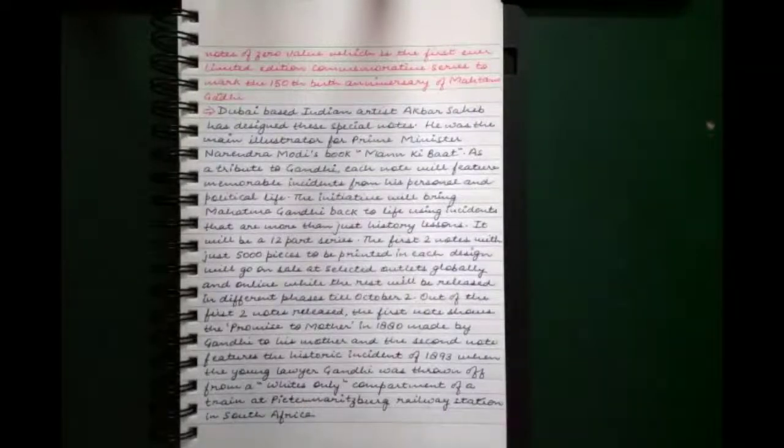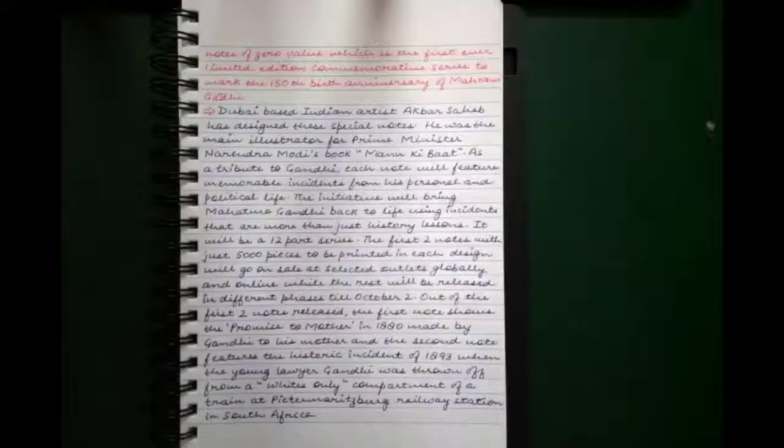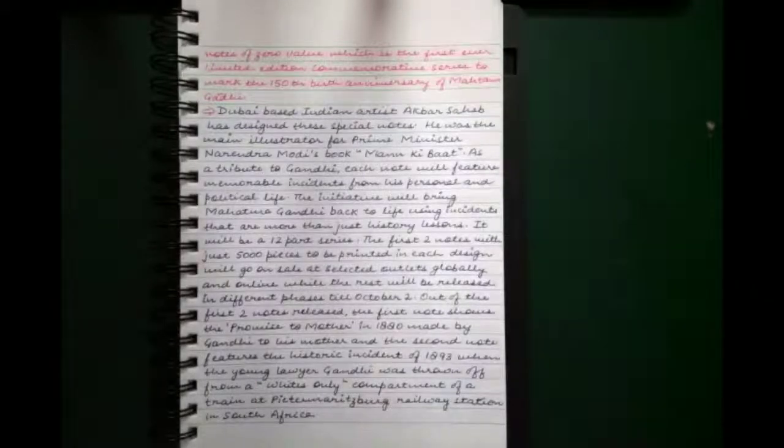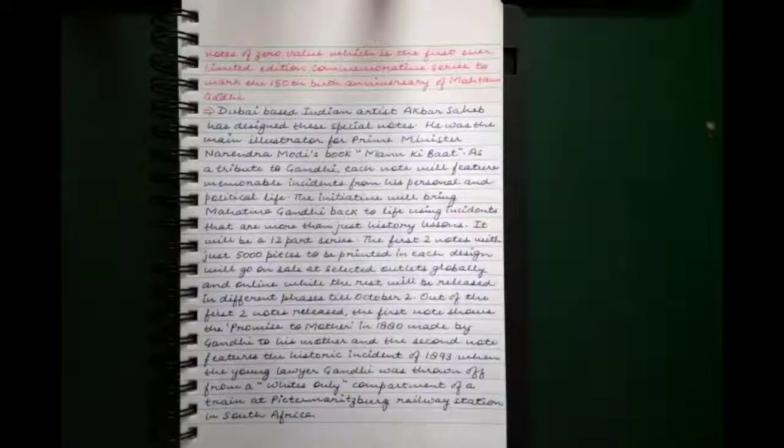Out of the first two notes released, the first note shows the promise to mother in 1880 made by Gandhi to his mother, and the second note features the historic incident of 1893 when the young lawyer Gandhi was thrown off from a white-only compartment of a train in Pietermaritzburg Railway Station in South Africa.